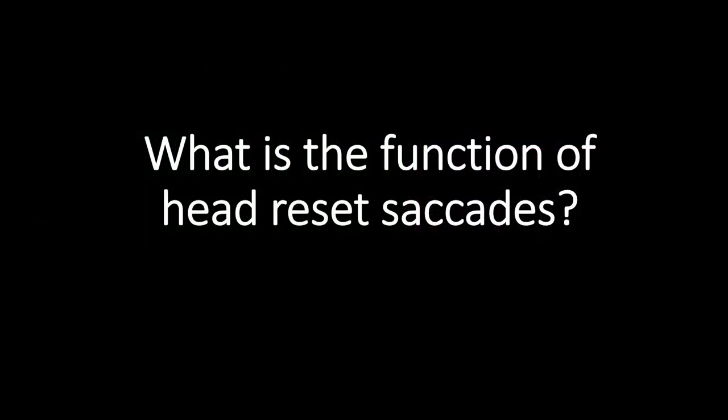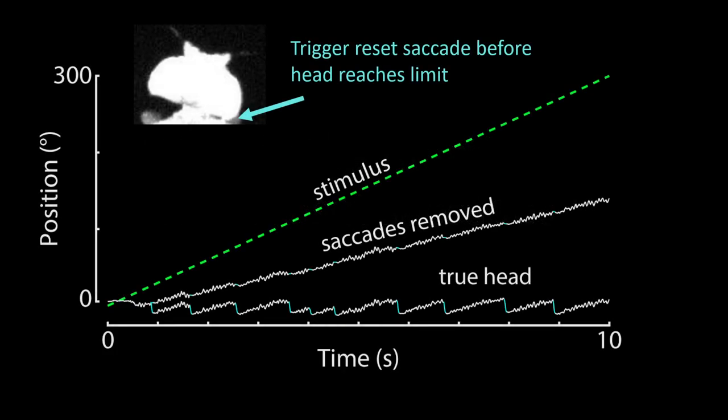So what is the function of head reset saccades and how do they improve flight performance in flies? By analyzing the smooth head movements between saccades, we revealed that flies will reset their head via a head saccade prior to the head reaching its anatomical limit. This strategy enabled flies to stabilize gaze quasi-continuously, even though the head's range of motion is non-continuous. Without head reset saccades, this would be impossible because the head would simply get stuck at its anatomical limit and remain there.